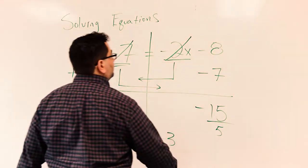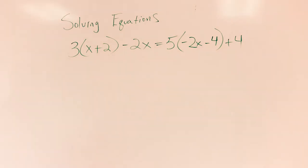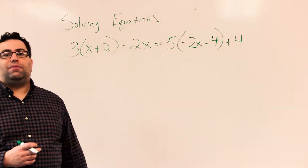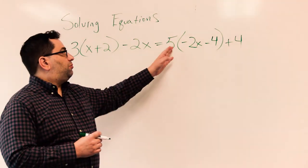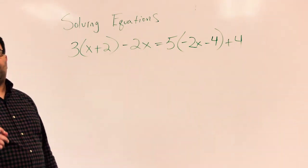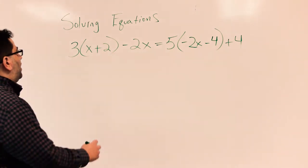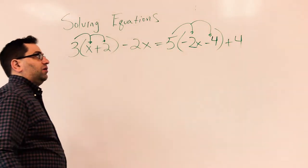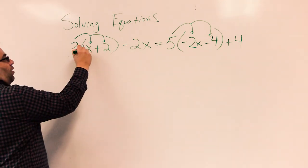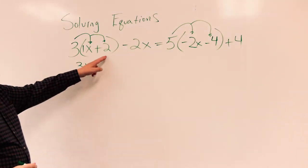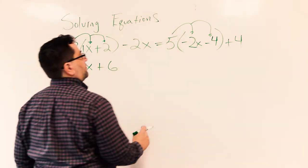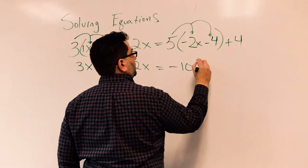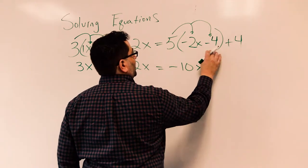Let's try one more example. We have a longer equation here, and one of the things you should notice right away are the parentheses. We have x plus 2 in parentheses, and negative 2x minus 4 in parentheses, and then a coefficient before each. The first thing you should do when finding an equation that looks like this is distribute — we want to distribute the coefficient over the terms. So I have 3 times 1x is going to be 3x, 3 times 2 is 6, minus 2x, and 5 times negative 2 is negative 10x, and 5 times negative 4 is negative 20.